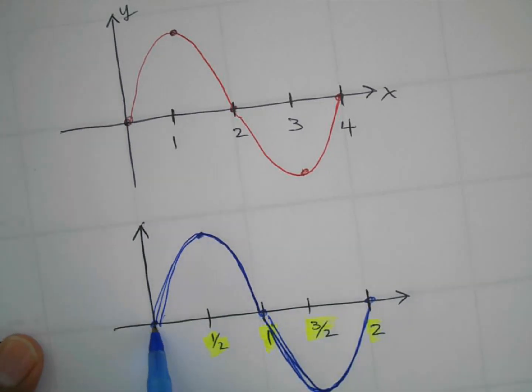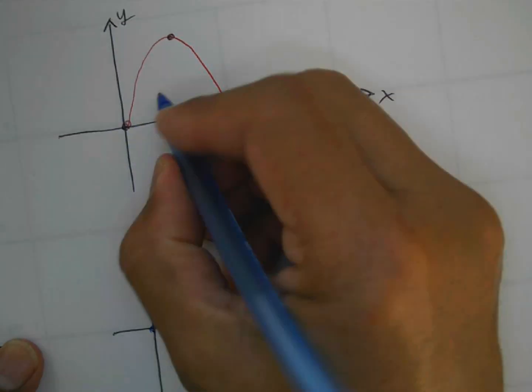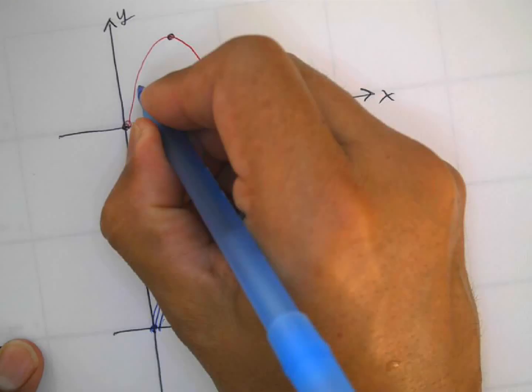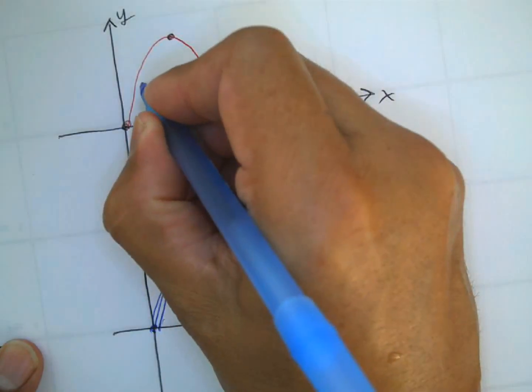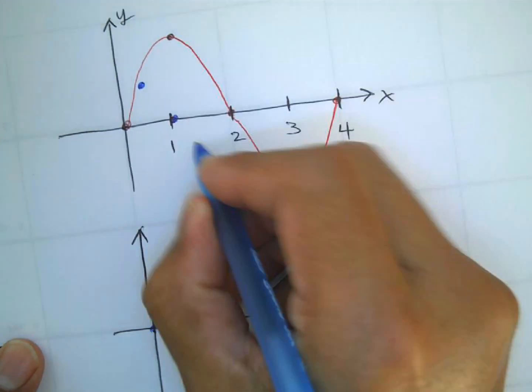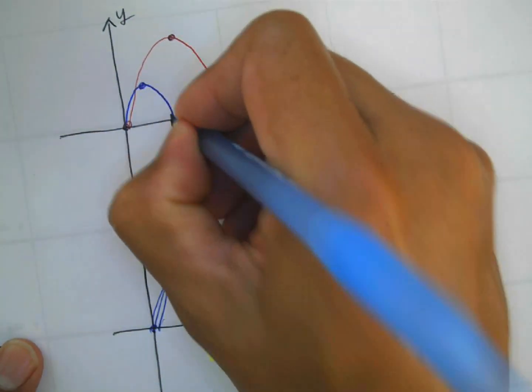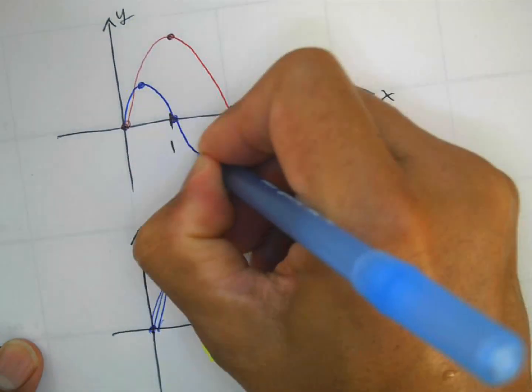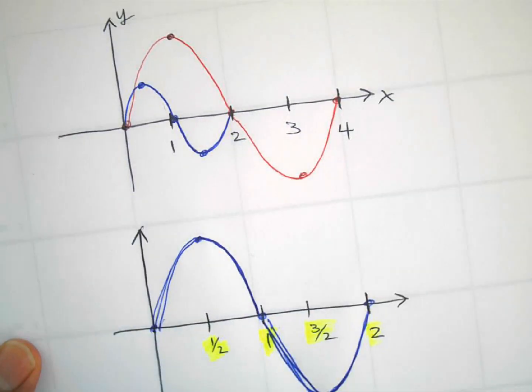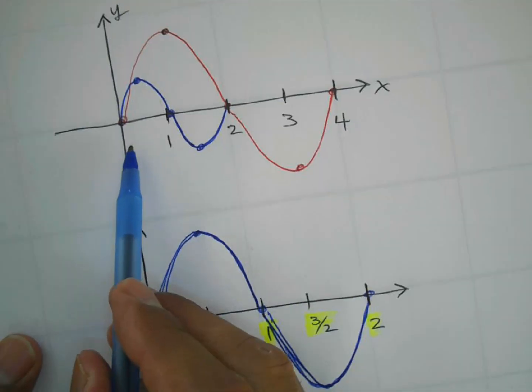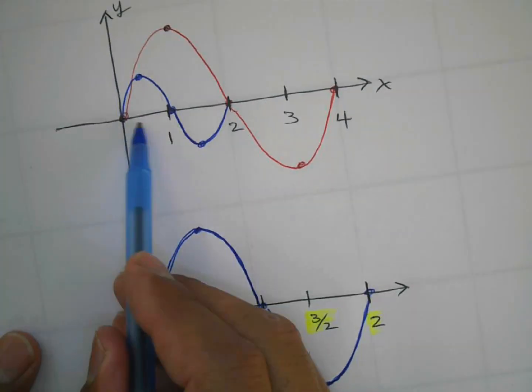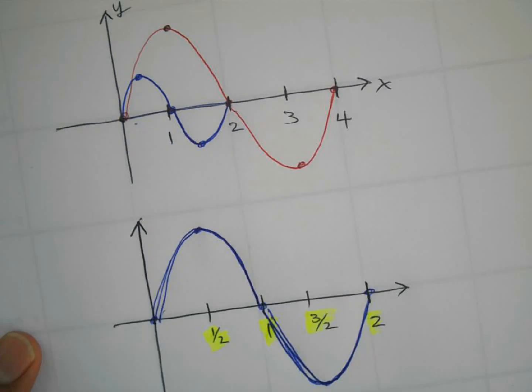Which means that this graph would actually be like this, here, like this. You see, because it made one cycle in this distance from zero to two.